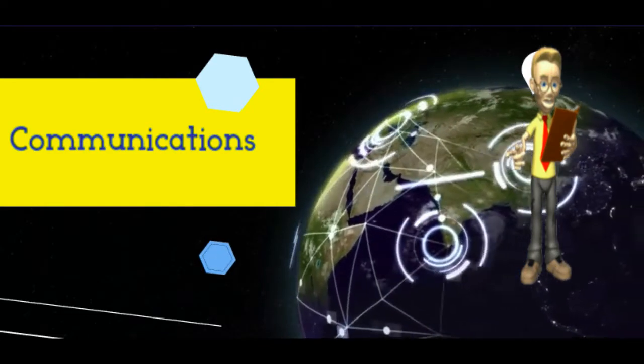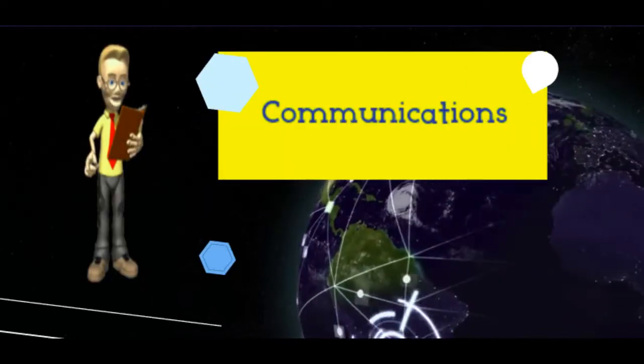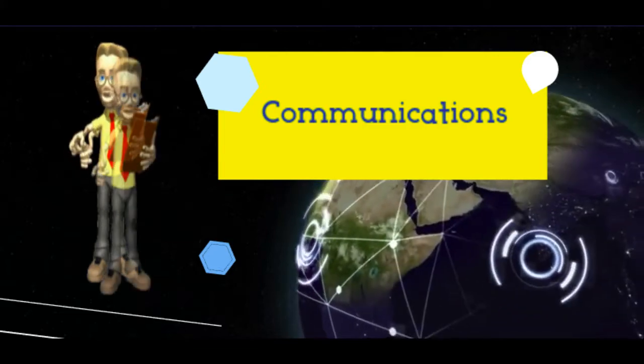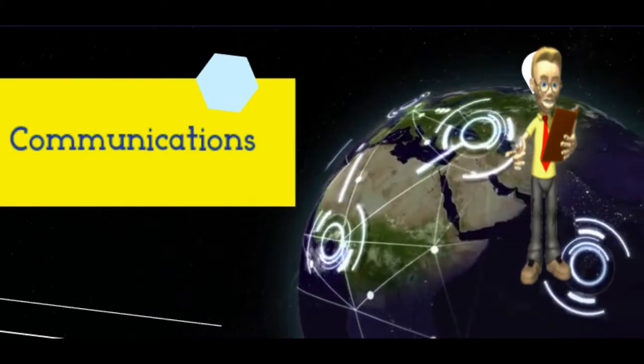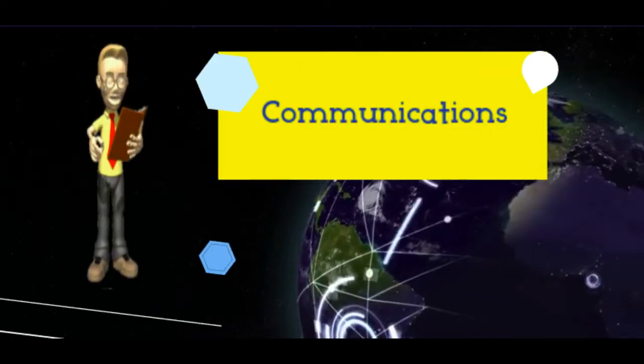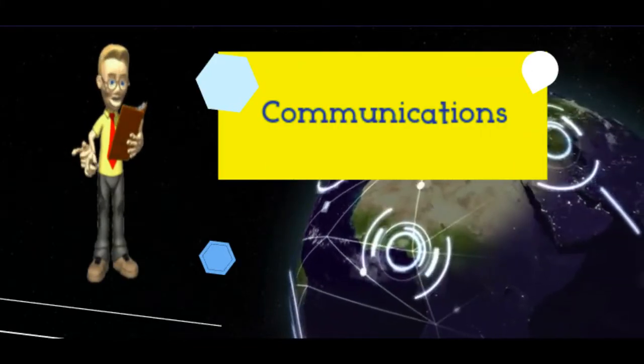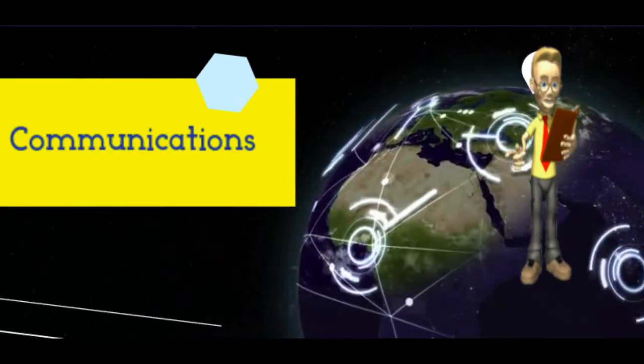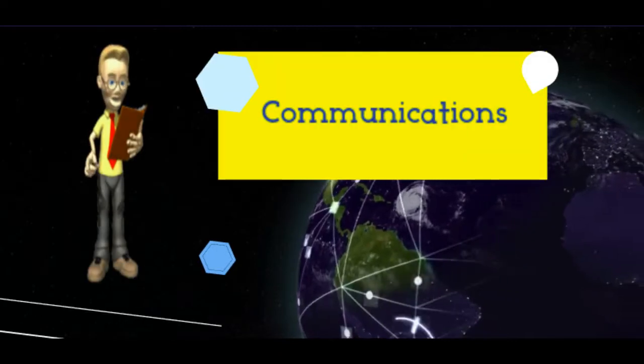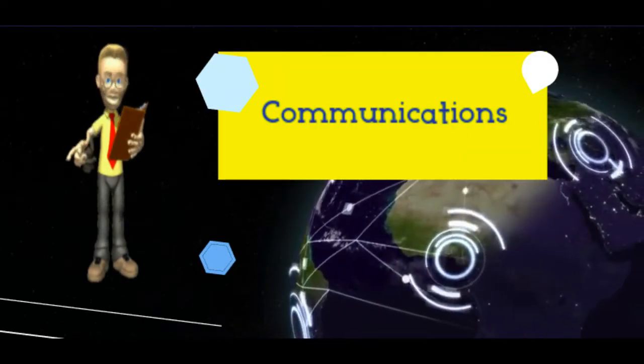They modify the signals in other ways and then bounce them back down to a second ground station somewhere else. Those signals can carry anything radio signals can carry on the ground, from telephone calls and internet data to radio and TV broadcasts. Communications satellites essentially overcome the problem of sending radio waves, which shoot in straight lines, around our curved planet.